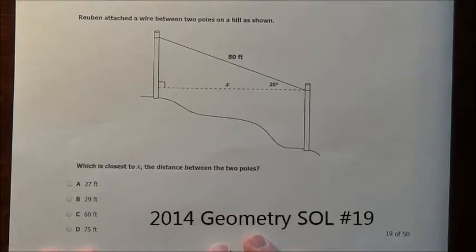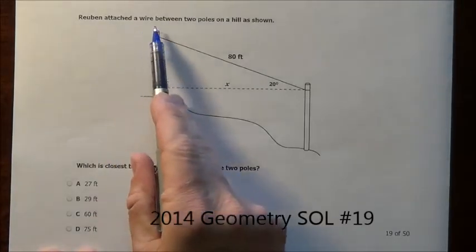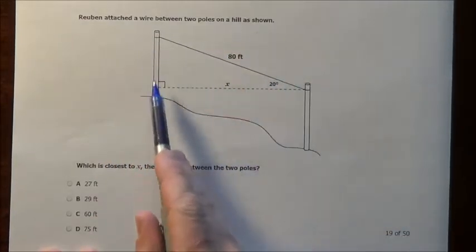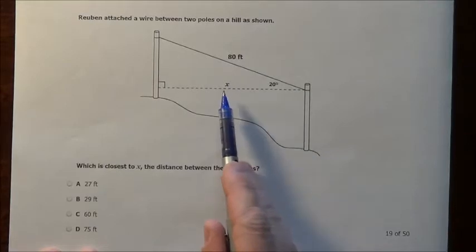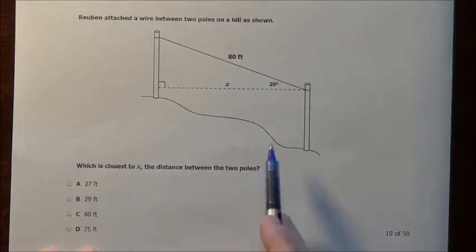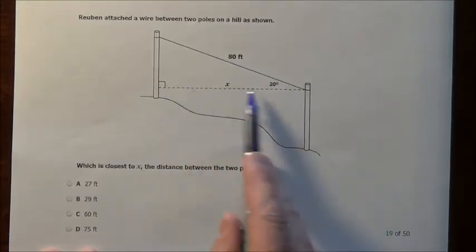Here's problem number 19 on the 2014 released Geometry SOL. It says Rubin attached a wire between two poles on a hill as shown. It basically wants us to find x here, which is closest to x, the distance between the two poles.